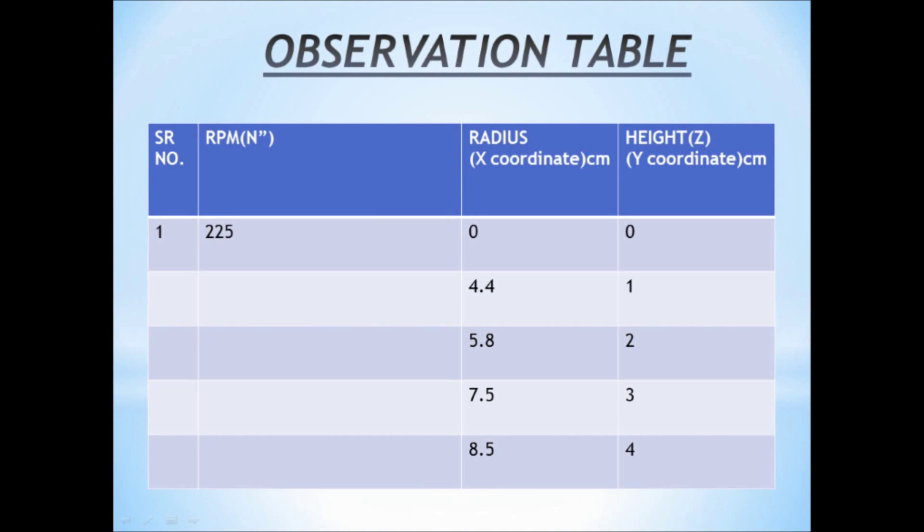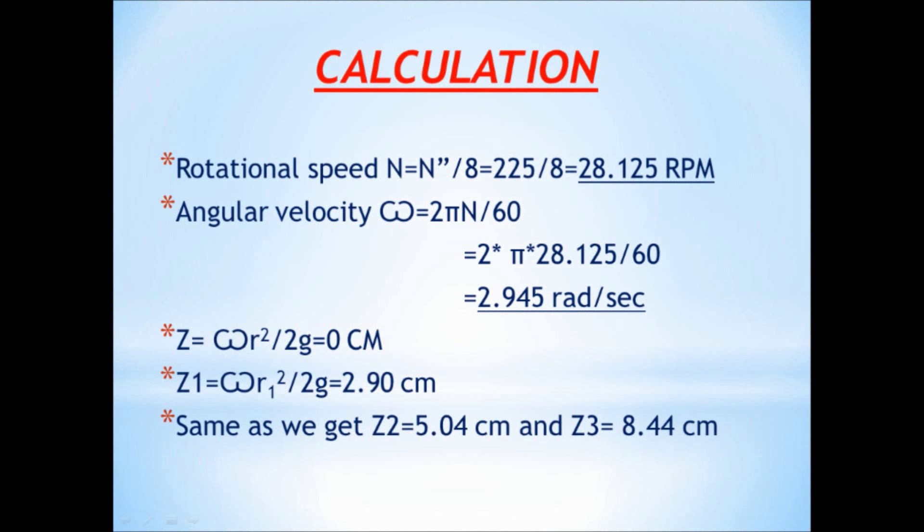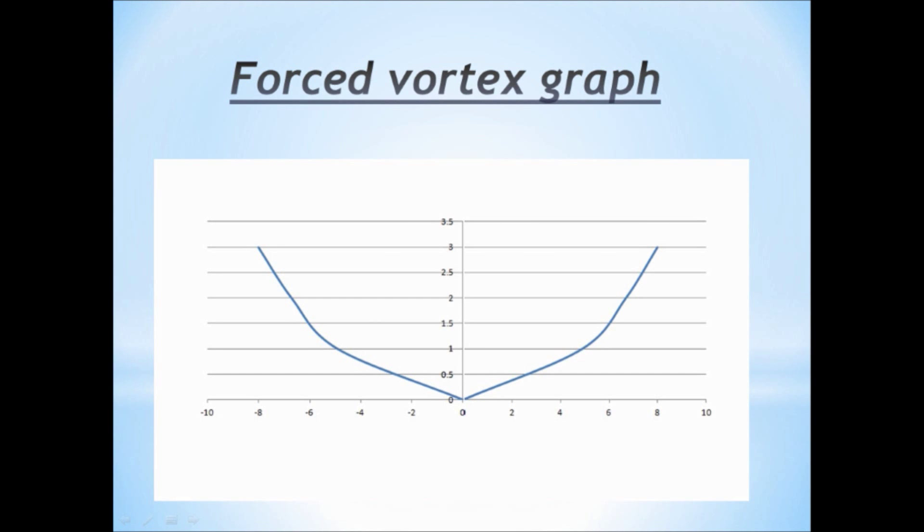Now as per the readings, fill up the observation table and calculate the angular velocity as per the given formula. Here Z is the distance between the initial water level and final vortex level. From these values, plot the coordinates and the profile of graph will be like this.